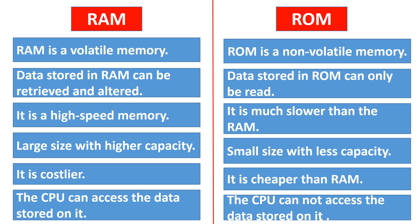Difference between RAM and ROM: RAM is a volatile memory, whereas ROM is a non-volatile memory. Data stored in RAM can be retrieved and altered, while data stored in ROM can only be read.